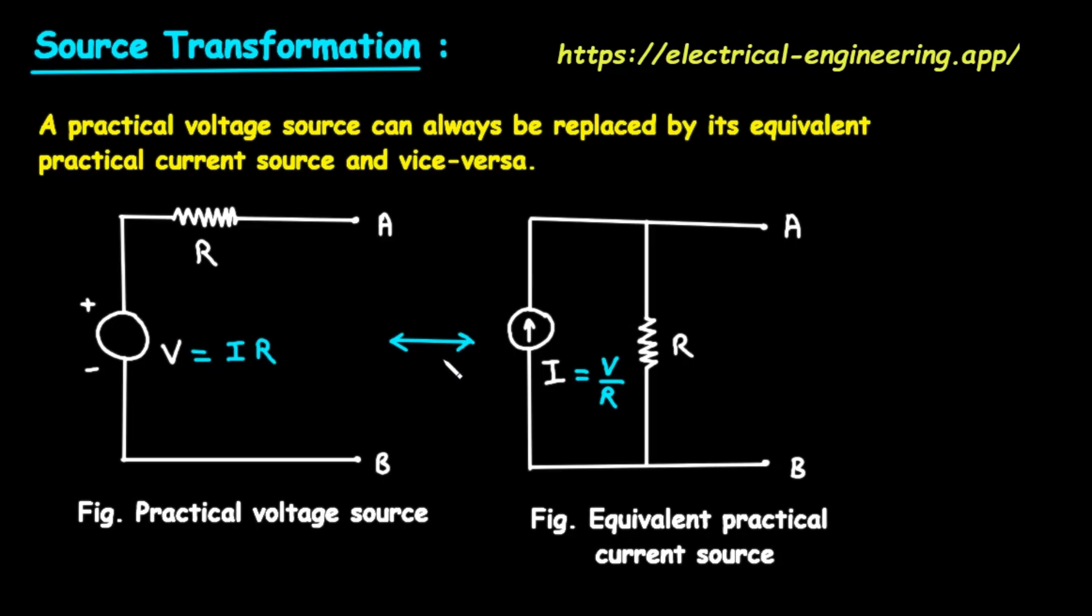Now for the most important part, how do we perform the transformation? The rules for the transformation come from the most fundamental law in electronics, Ohm's law. Let's go from left to right, transforming a voltage source into a current source. Imagine we have the practical voltage source on the left. We know its voltage, V, and its series resistance, R. We want to find its equivalent current source.